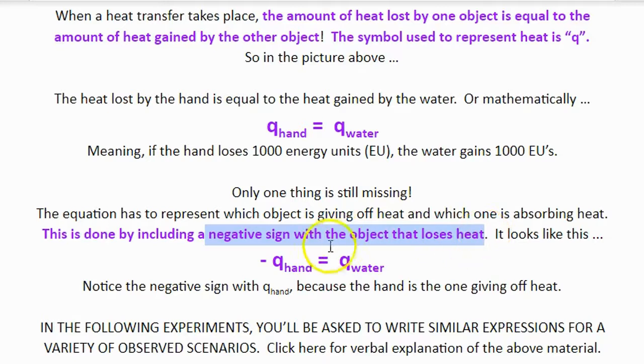In our example of the hand in the water, the hand is the one that is giving its heat to the water. So you'll see that the negative sign is written with q sub hand.